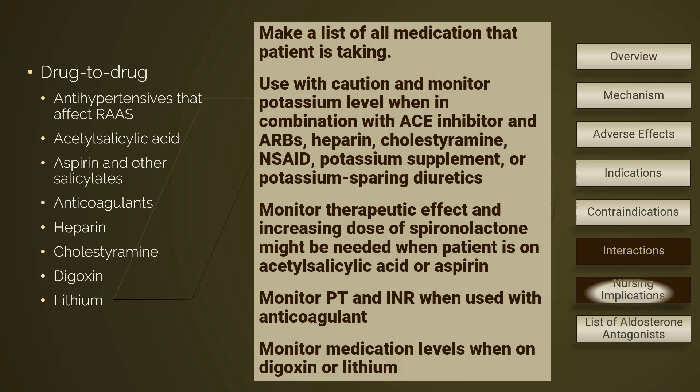When drug-to-drug interactions are a concern, nursing care should include making a list of medications the patient is currently using. Monitor potassium levels when the patient uses medications that can alter potassium level — such as ACE inhibitors, ARBs, heparin, cholestyramine, NSAIDs, potassium supplements, and potassium-sparing diuretics. Monitor the therapeutic effects of aldosterone antagonists; increasing doses may be needed when the patient uses spironolactone with medications that decrease therapeutic effects, such as acetylsalicylic acid, aspirin, and other salicylates. Monitor PT and INR when the patient is also on an anticoagulant. Monitor for drug toxicity when the patient is also on digoxin or lithium.